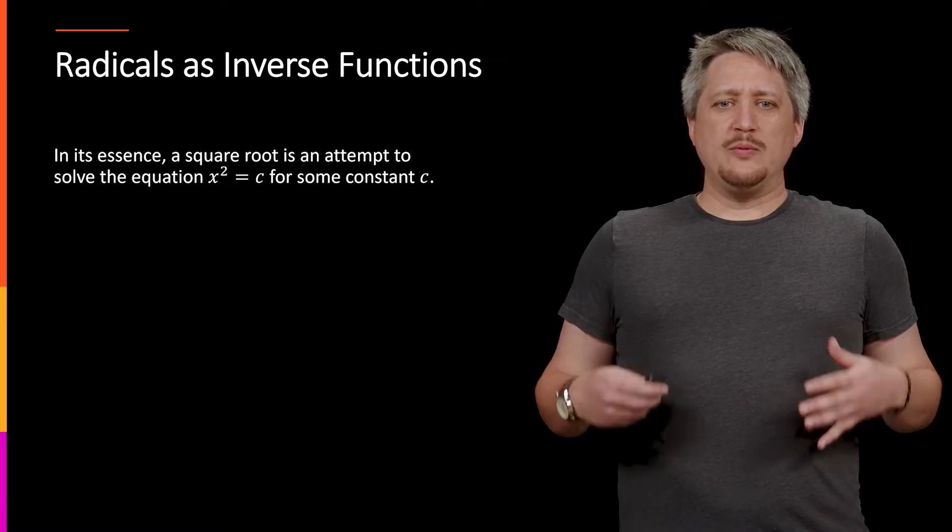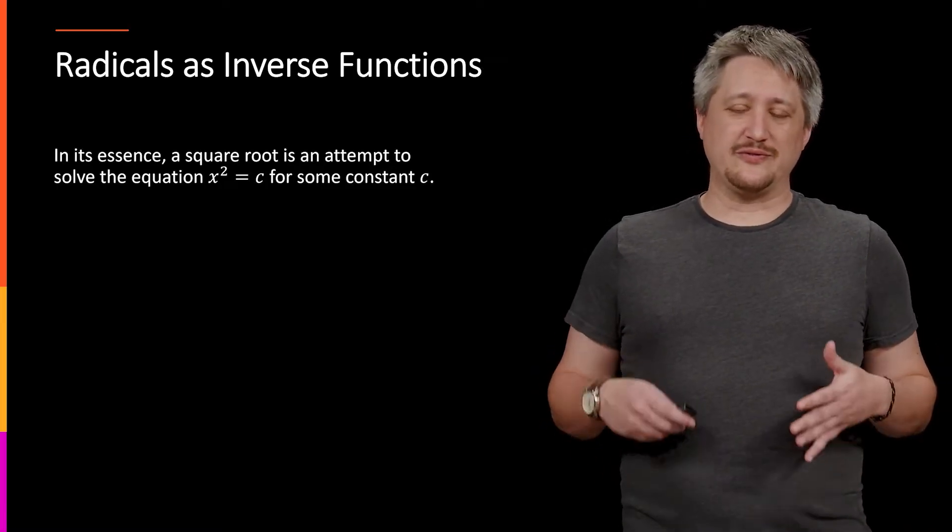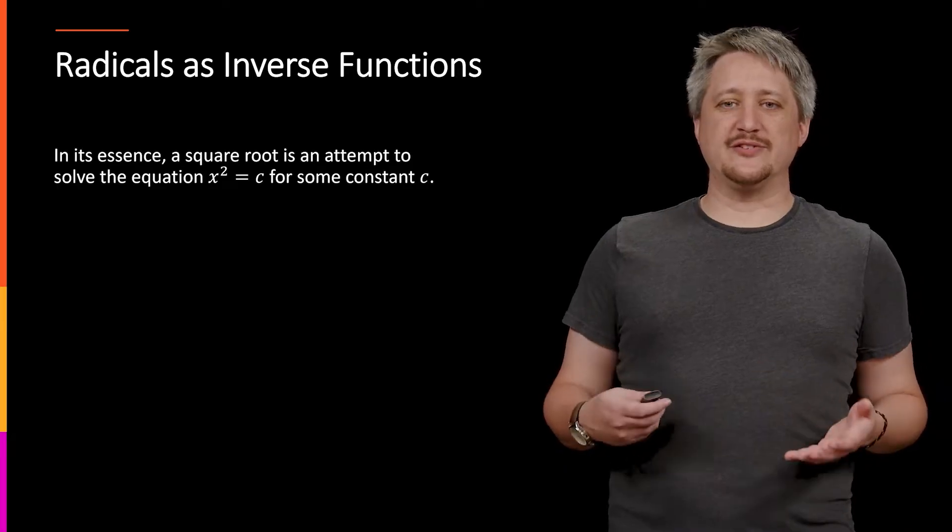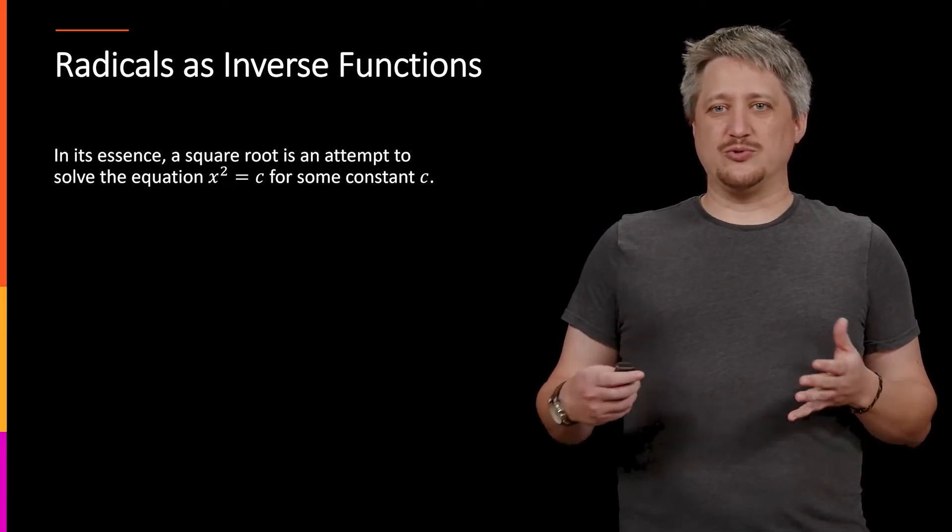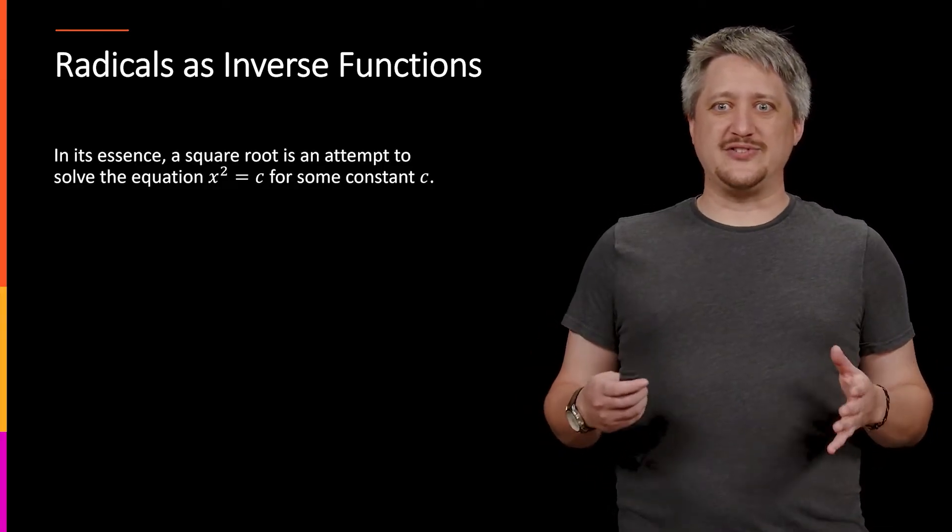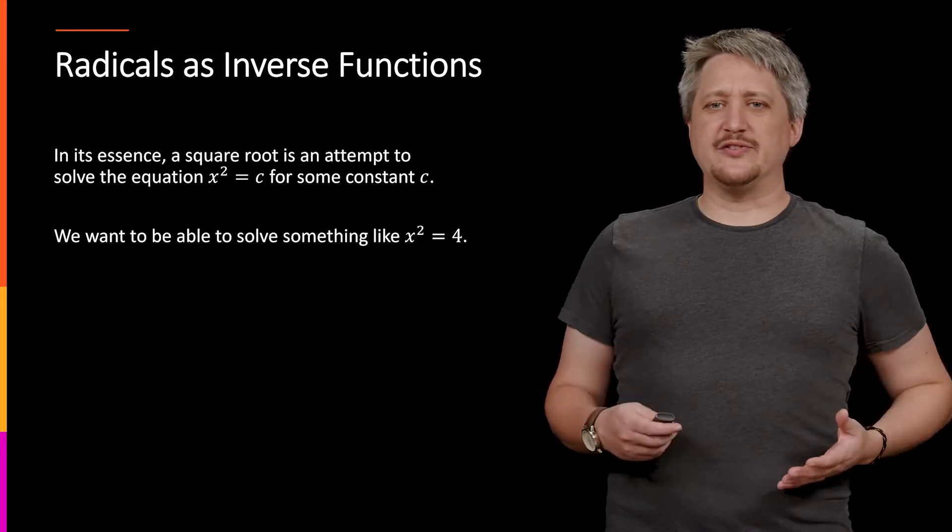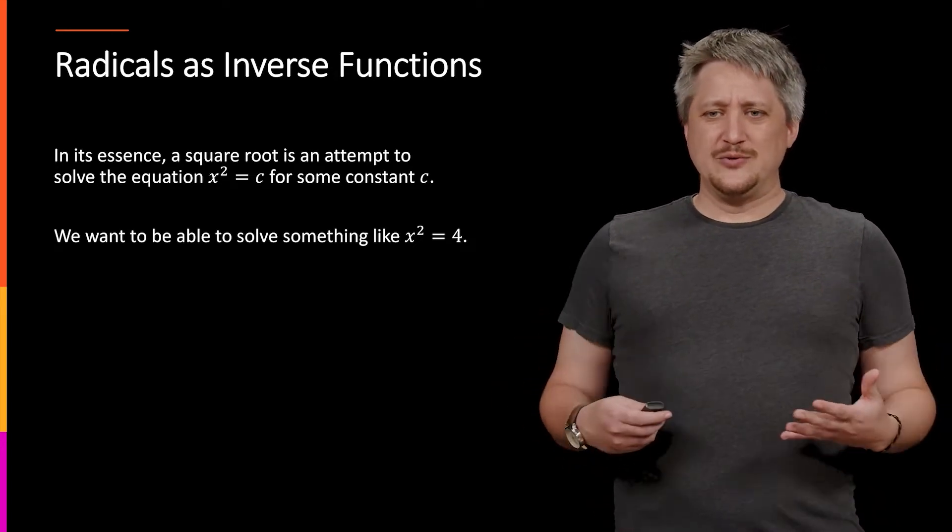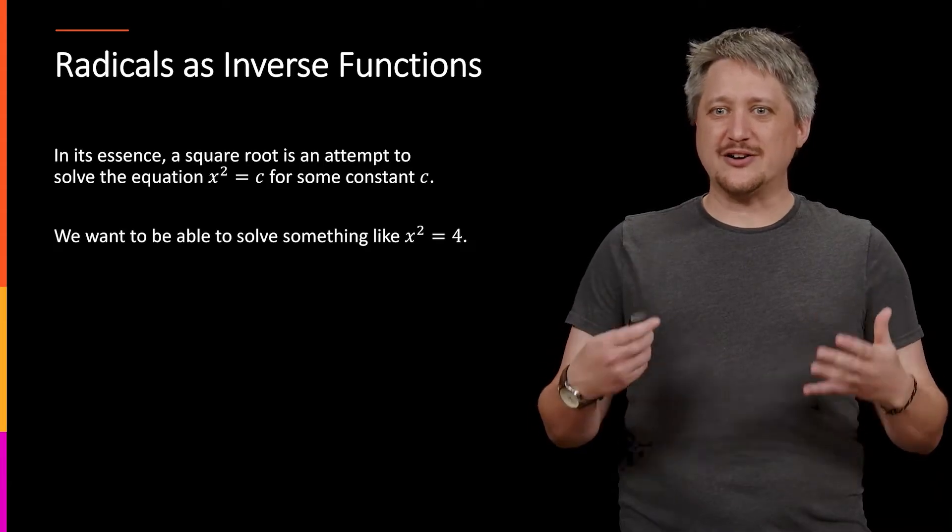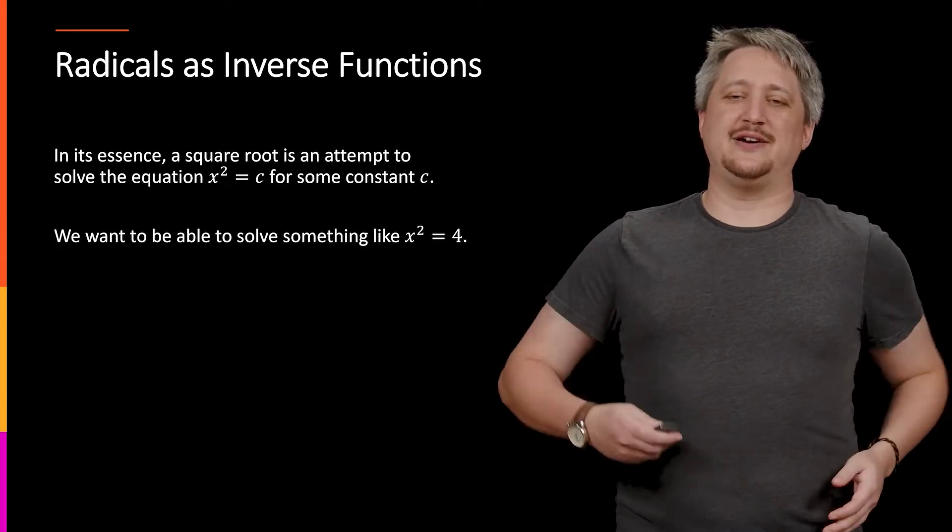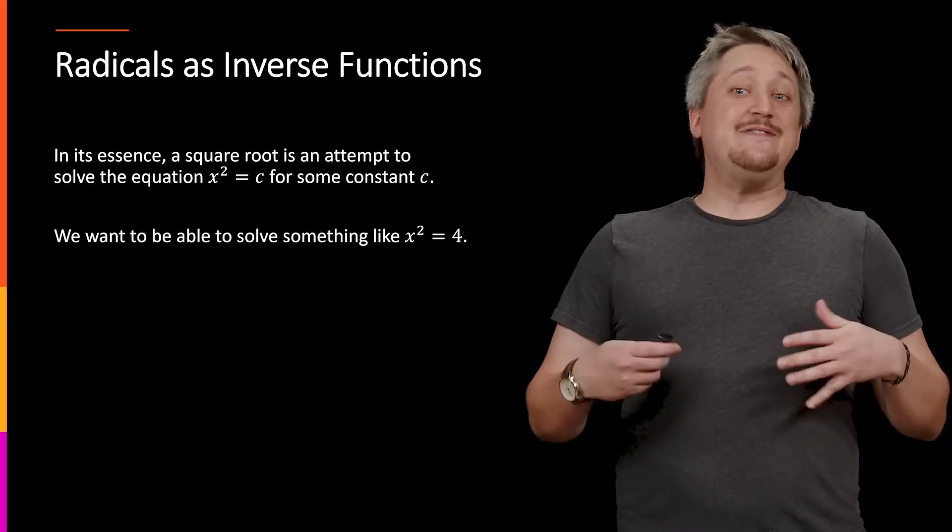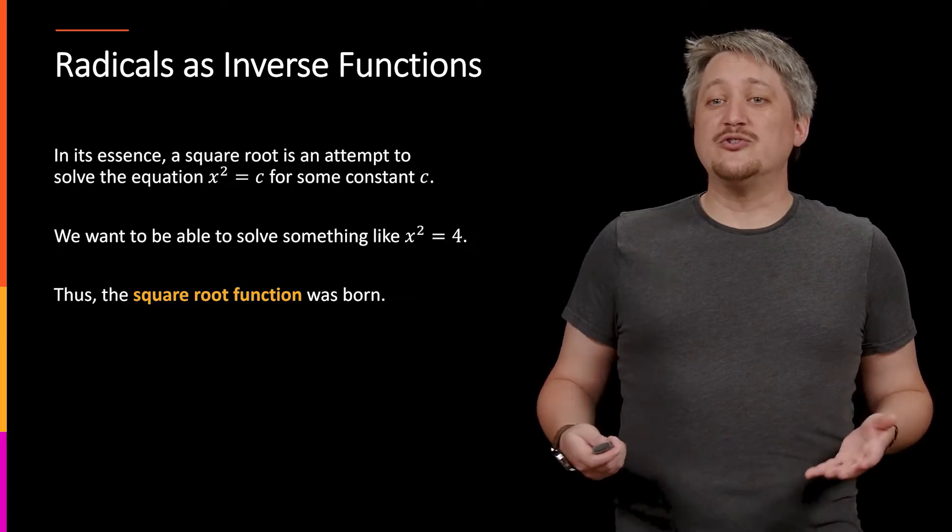When we want to look at radicals as inverse functions, it helps to remember where these things come from. In essence, square roots come up in this natural format trying to invert things. For the square root, we want to figure out the solutions to x² = c for some constant c. So as an example, we might want to solve something like x² = 4. Eventually we needed some way of notating this, and that's when that square root function thing was born.